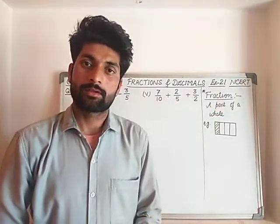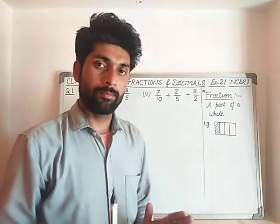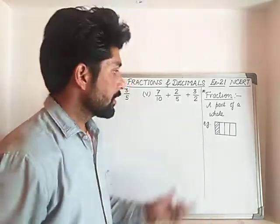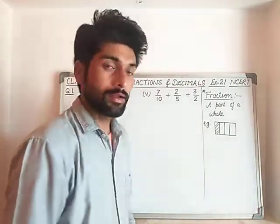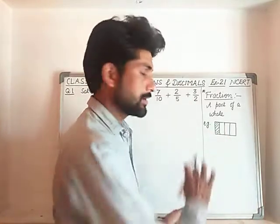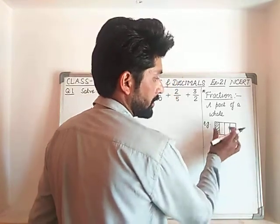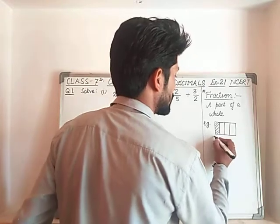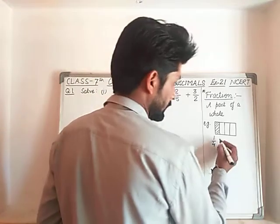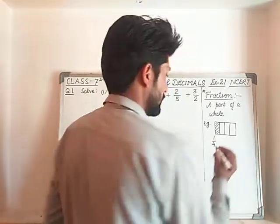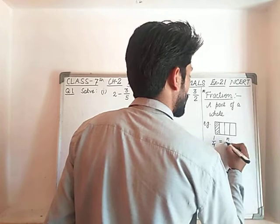So what is a fraction? A fraction is a part of a whole quantity. For example, we have a plain paper like this and we divide that paper into four equal parts. So each part is a fraction of that whole paper. Each part can be written as one upon four, or one-fourth. That one upon four is a fraction, and we can write it as numerator upon denominator.